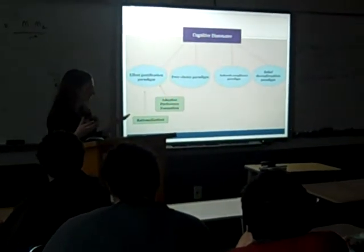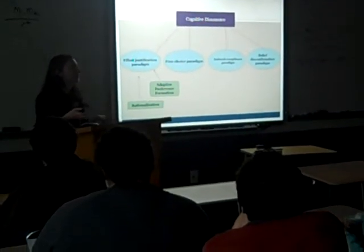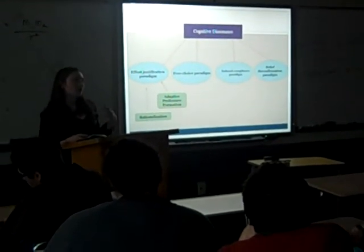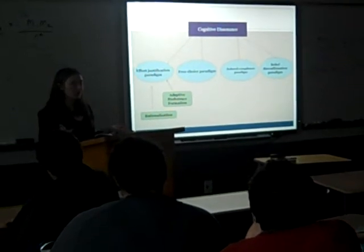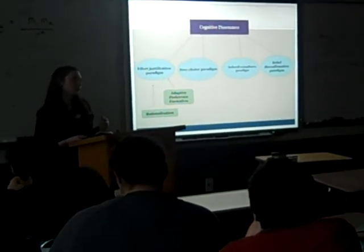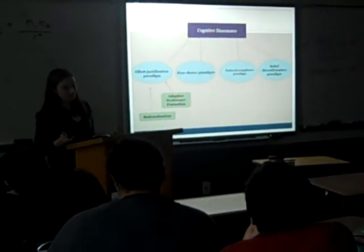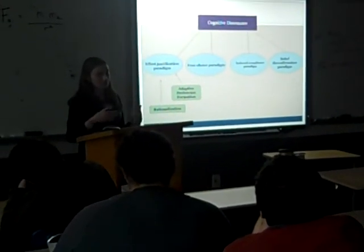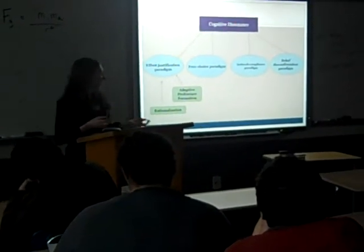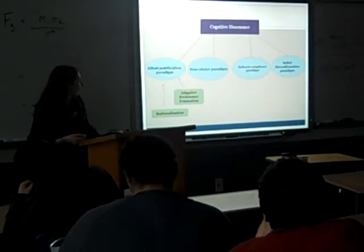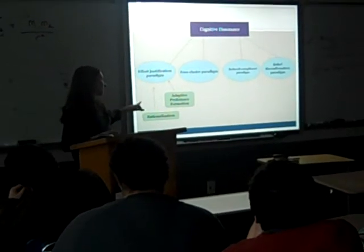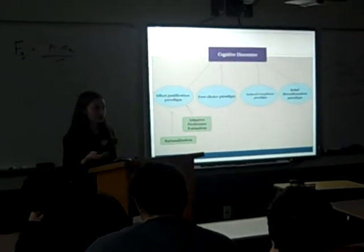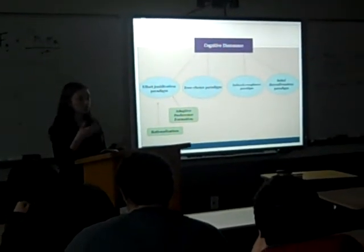People try to rationalize their choices — you see it in high schools a lot. If you ask someone how much GPA or SAT scores should be weighted in a college admission process, you'll pretty accurately see how they did on those two things. If they say they don't think SAT should be weighted at all, they probably didn't do particularly well, so they're rationalizing their effort. That goes hand-in-hand with adaptive preference formation — if you didn't do particularly well on something, you won't hold it to a lot of value.